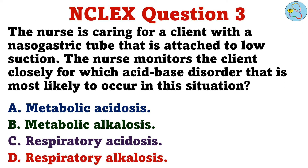Question 3. The nurse is caring for a client with a nasogastric tube that is attached to low suction. The nurse monitors the client closely for which acid-base disorder that is most likely to occur in this situation. A. Metabolic acidosis. B. Metabolic alkalosis. C. Respiratory acidosis. D. Respiratory alkalosis.